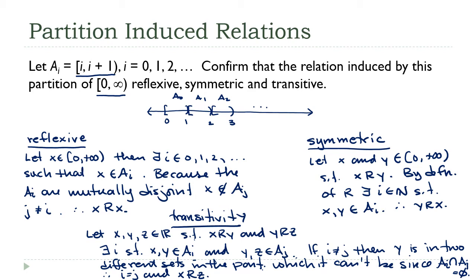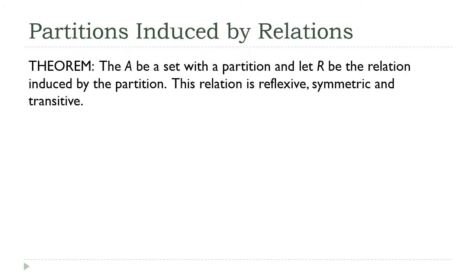Now that we've seen this for a specific example, on the next slide I'm going to prove it is true not just for this partition but for all partitions. The reason I went through the specific case first is that the general proof follows the exact same reasoning for each of the three properties. So: let a be a set with a partition, and let r be the relation induced by the partition.